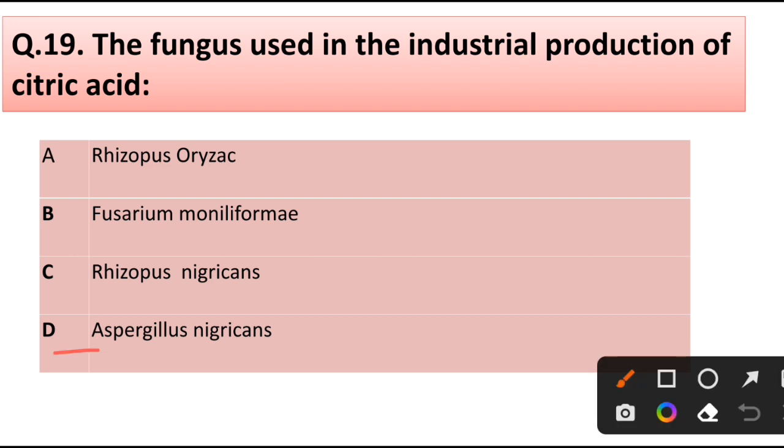Question number 19. The fungus used in industrial production of citric acid is: Rhizopus aureus, Fusarium moniliforme, Rhizopus nigricans, or Aspergillus nigricans. Correct answer is option D, Aspergillus nigricans.